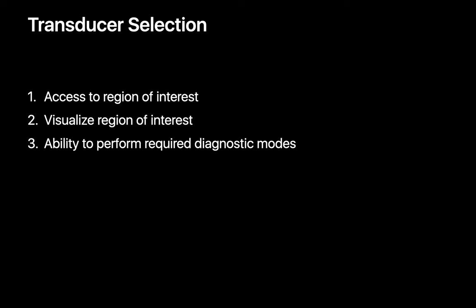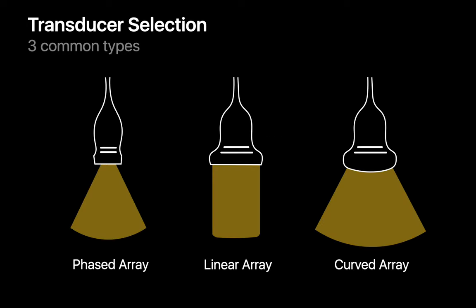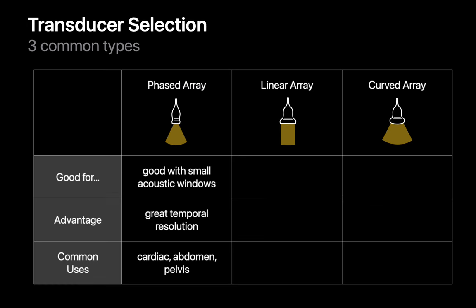Transducers come in different types, with different head shapes and sizes. Three common types are phased array, linear array, and curved array transducers. Phased array transducers are excellent when access windows are limited, such as between two ribs. They provide a fan-shaped image and great temporal resolution, which is crucial for imaging moving structures like the heart. They're also often used in abdominal and pelvic imaging.